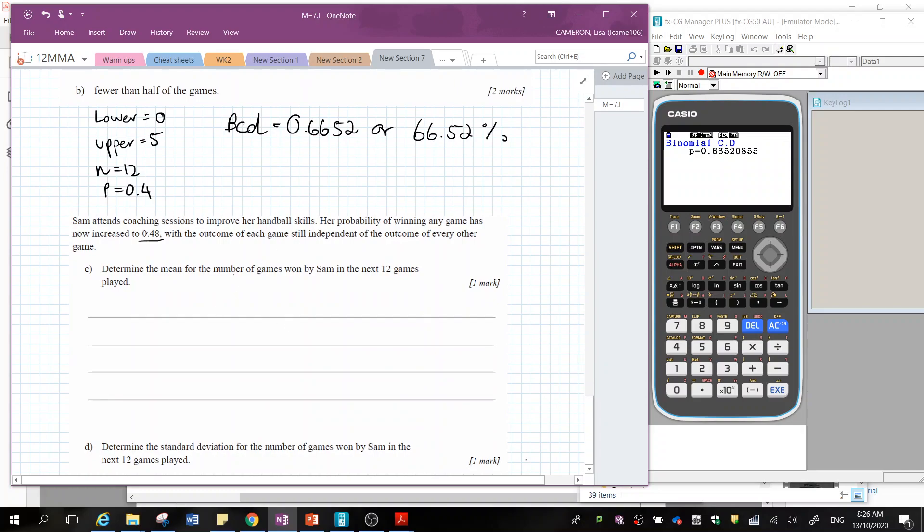Okay, the next one. So Sam attends coaching sessions to improve her handball skills. Her probability of winning any game has now increased to 0.48. So now our new probability is going to be 0.48. With the outcome of each game still independent, so it's still binomial. So we're going to determine the mean. So I'm going to look at our statistics and see what formulas I have. So I've got mean and variance for binomial distribution, which is what we're going to use in this case.